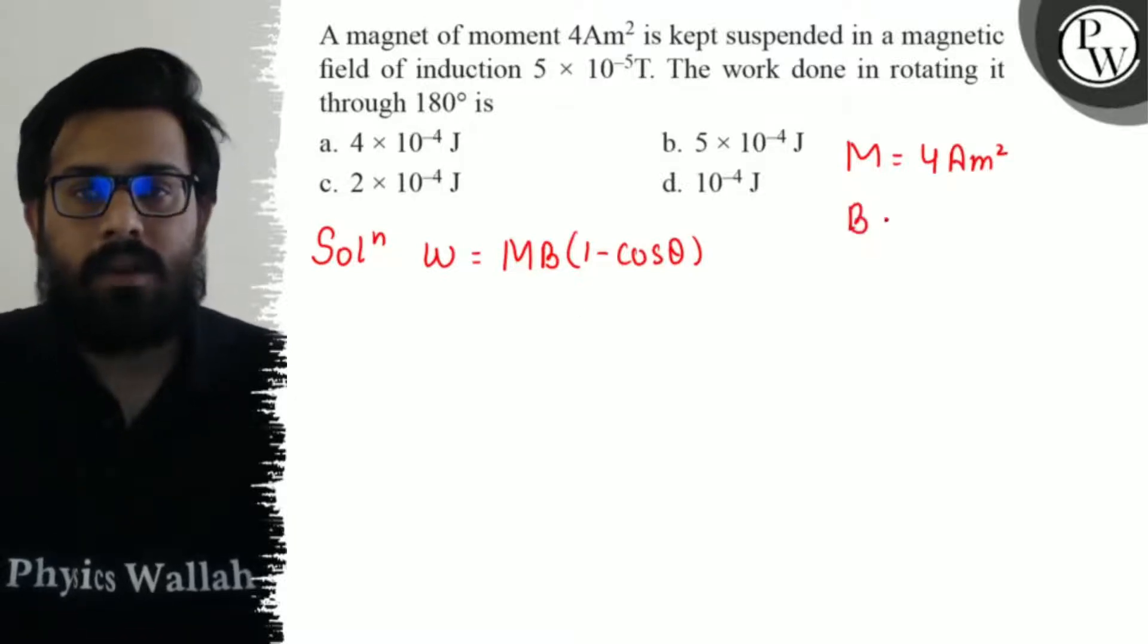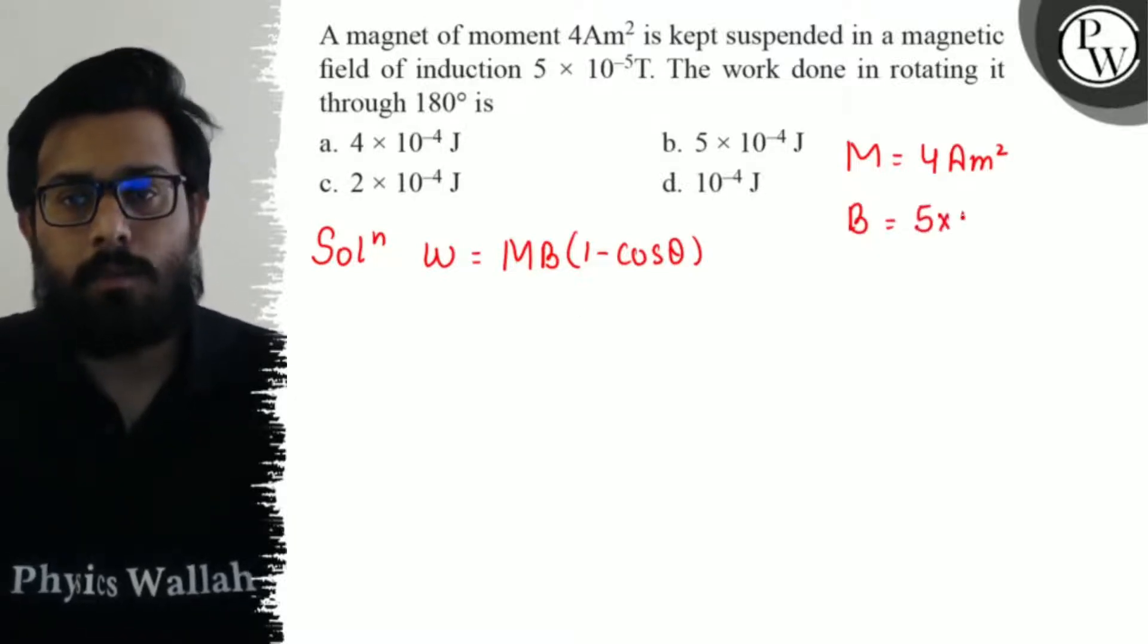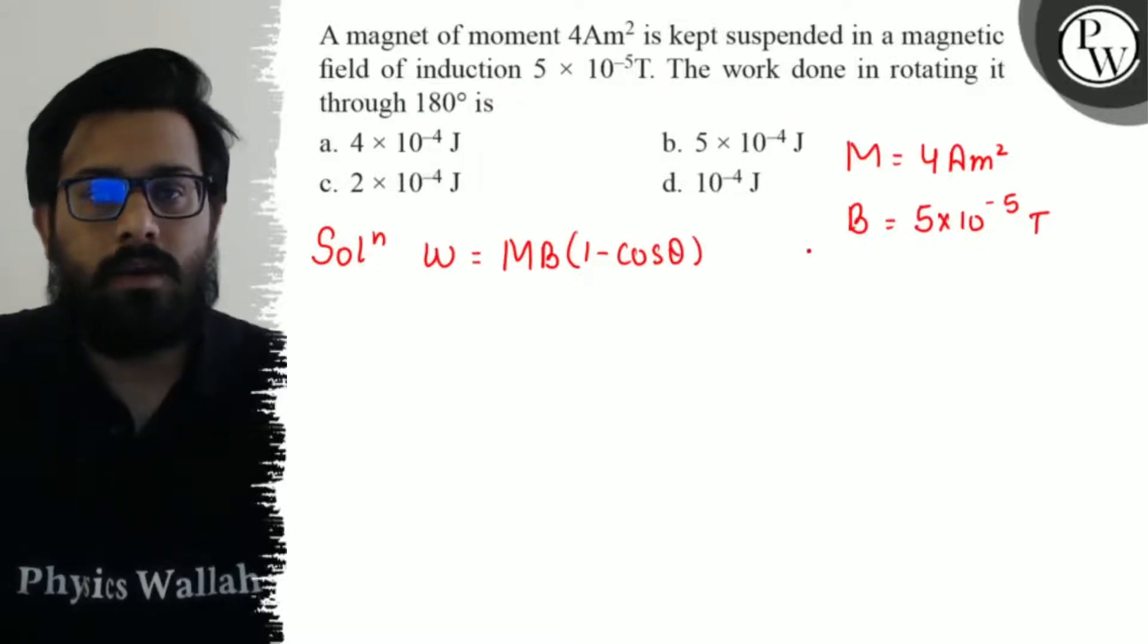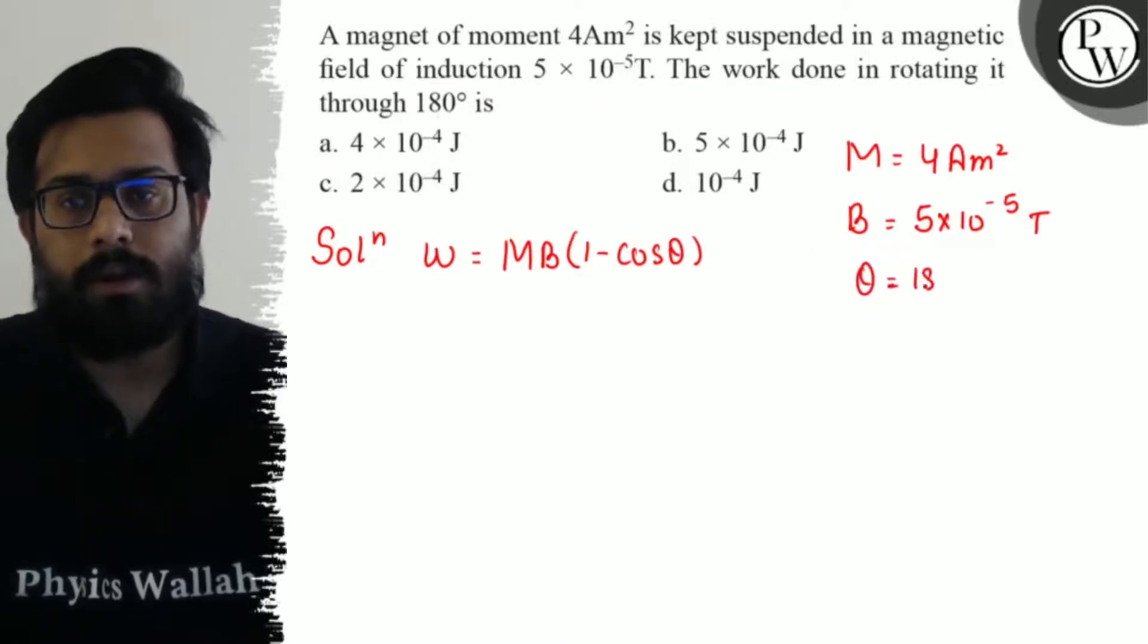The value of the magnetic field B is 5 × 10⁻⁵ tesla, and it is rotated through 180 degrees, so theta is 180 degrees.